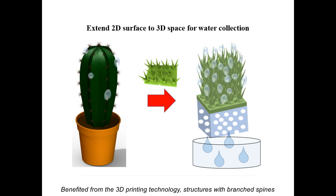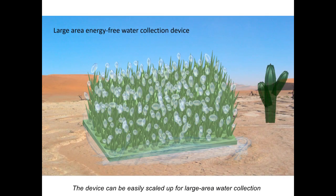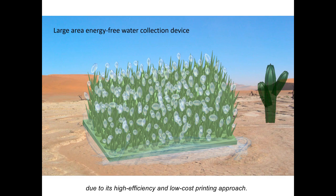Benefited from the 3D printing technology, structures with branched spines that are optimally distributed in 3D space can be studied in the future. The device can be easily scaled up for large area water collection due to its high efficiency and low-cost printing approach.